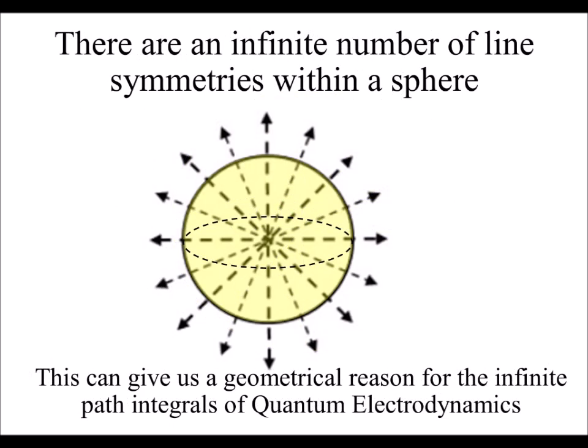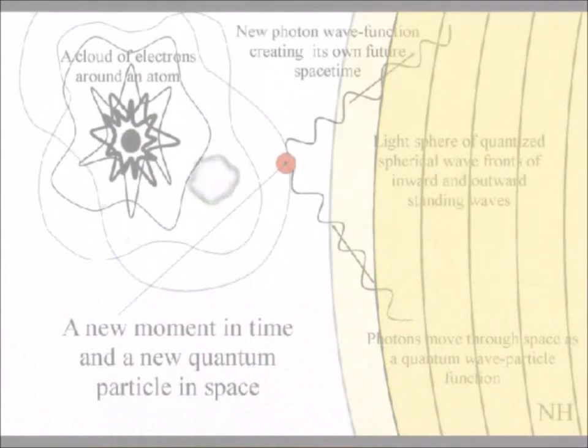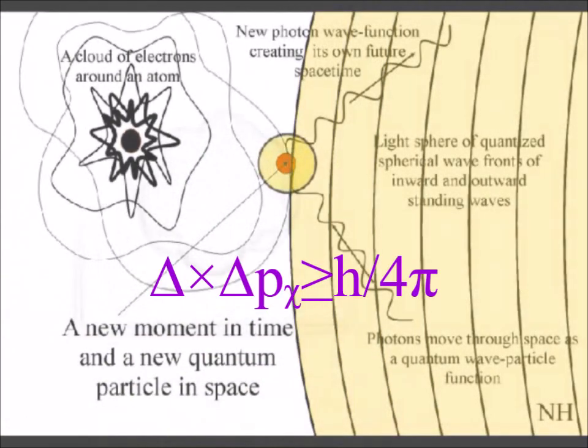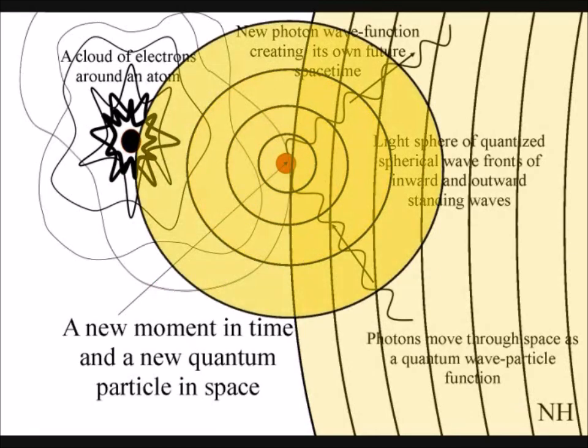When the wavefront comes in contact with the electrons of an atom, it will form a photon-electron coupling, or dipole moment. This will form a new spherical wave that will radiate out, forming a probabilistic uncertain future.